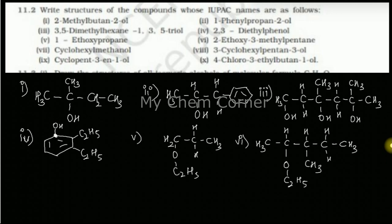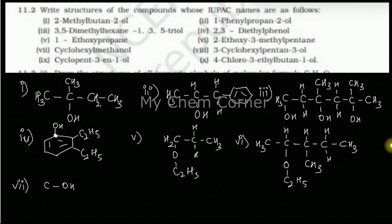The seventh one is cyclohexylmethanol. Methanol is just a one-carbon chain directly bonded to an OH — it is methyl alcohol. The name says cyclohexyl, which means this carbon should be bonded to a cyclohexyl group — a six-carbon ring. Fill in the hydrogens and that completes the seventh structure.